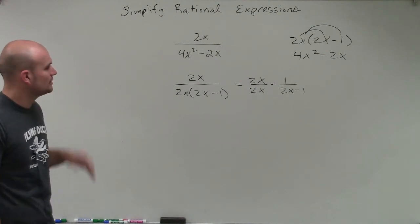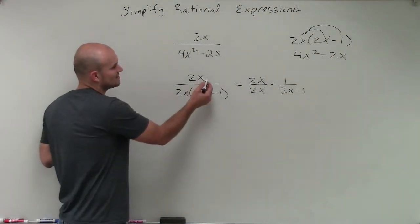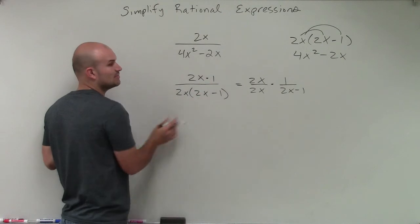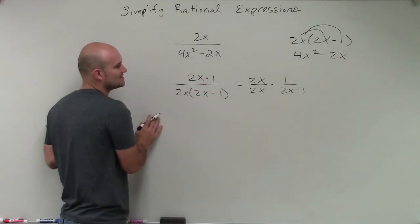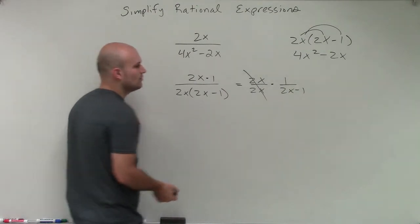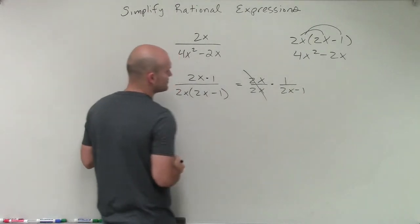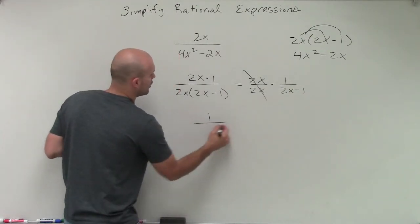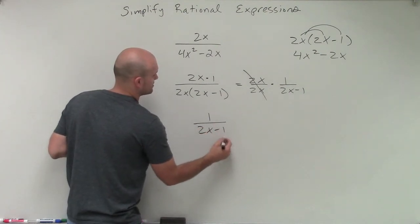So now what we're going to look at is you can see, well, this 2x, because you could say that's going to be broken up by 1. Now you can see that these can now divide out to 1. So therefore, it's just going to leave us with a final solution of 1 over 2x minus 1.